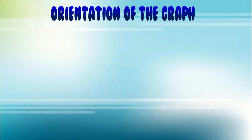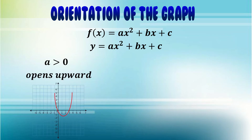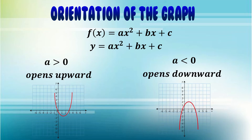Let us talk about the orientation of the graph. Remember that the general form of a quadratic function is f(x) = ax² + bx + c, or y = ax² + bx + c. If a is positive or greater than zero, then the parabola opens upward. But if a is less than zero or negative, then the parabola opens downward. So by looking at the value of a, the numerical coefficient of x², we can identify the orientation of the graph of our quadratic function.